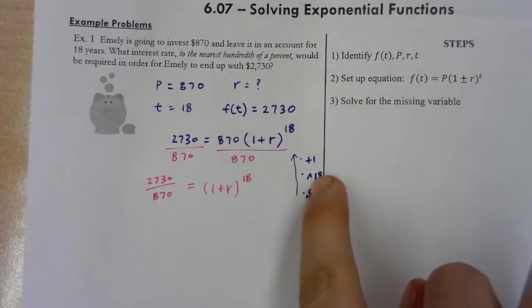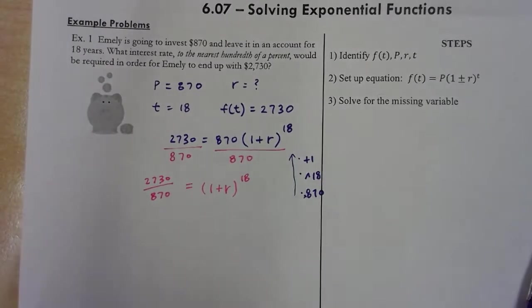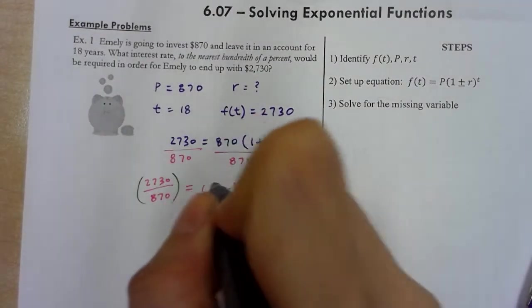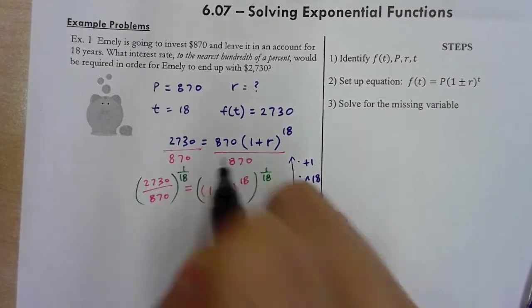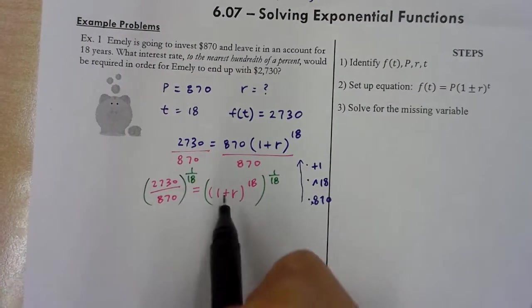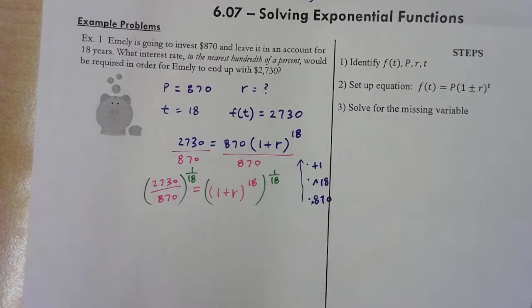So I undid this. Now, how do I undo raising it to 18th? Well, you raise it to 1 over 18, which is the same thing as actually taking the 18th root.